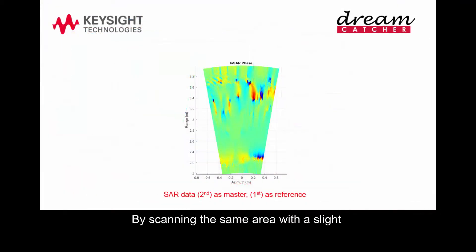By scanning the same area with a slight difference in the sensor position, an extra phase difference is introduced by a stereoscopic effect. The InSAR fringes are related to the topography of the area under illumination, which can be further processed to calculate the topographic height and to produce a digital elevation model, DEM.